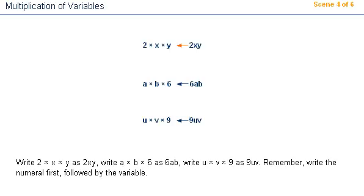Write 2 times x times y as 2xy. Write a times b times 6 as 6ab. Write u times v times 9 as 9uv. Remember, write the numeral first, followed by the variable.